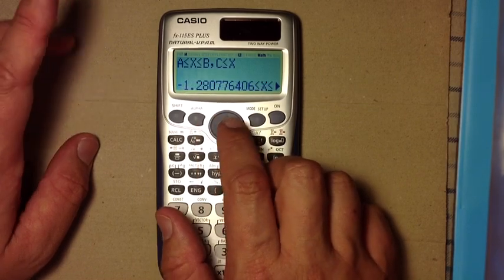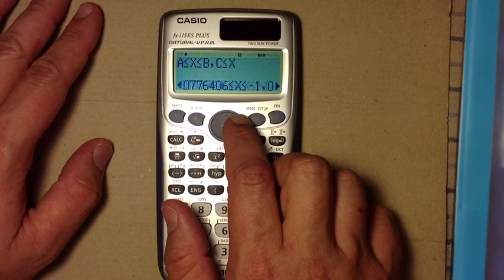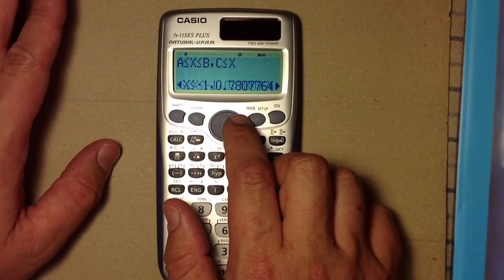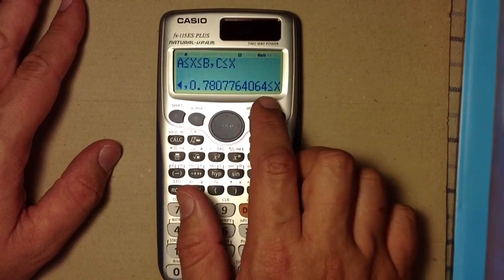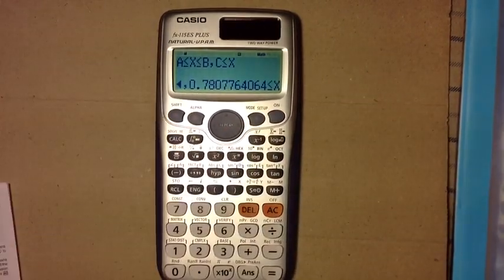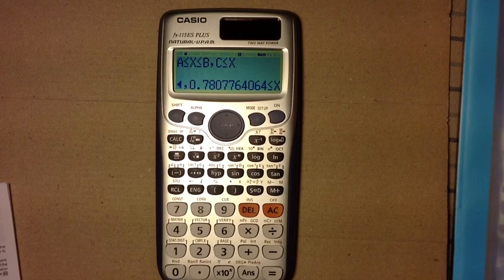And I come up with an inequality where all X is available. So, in this case, you have X between negative 1.28, about, and negative one, and then also X is greater than or equal to 0.78, and that's where the solutions to the inequality of the cubic equation.